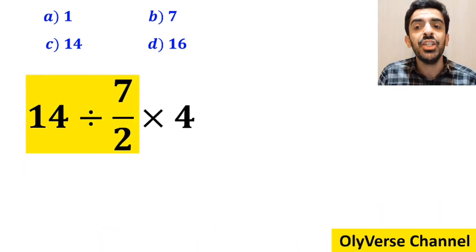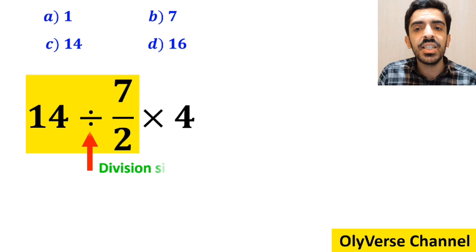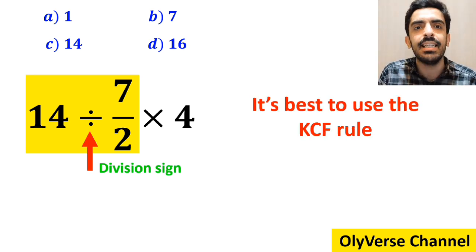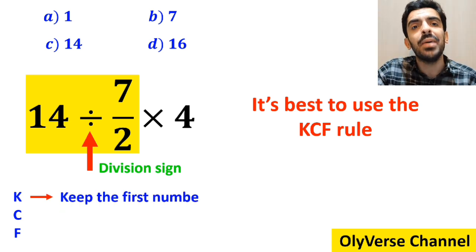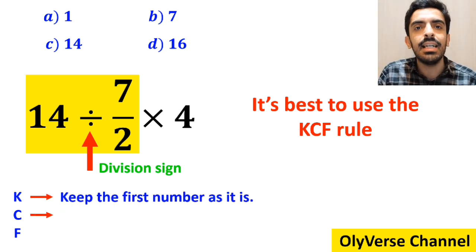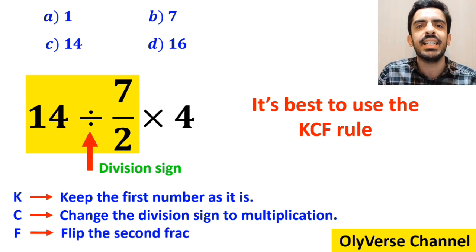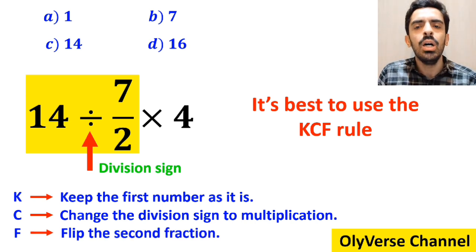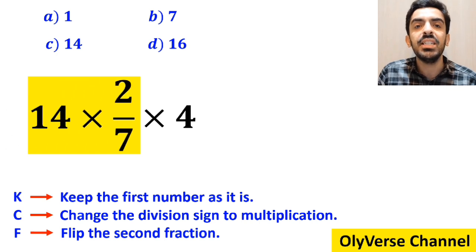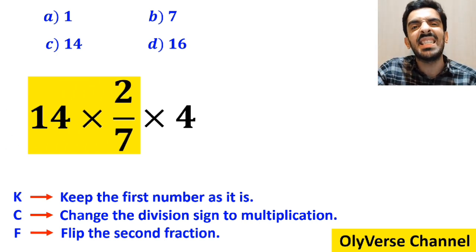First we perform the division between 14 and 7 over 2. Whenever we see a division sign between two terms, it's best to use the KCF rule. In this rule, K stands for keep the first number as it is, C stands for change the division sign to multiplication, and F stands for flip the second fraction. So, we remove the highlighted part and replace it with 14 multiplied by 2 over 7.